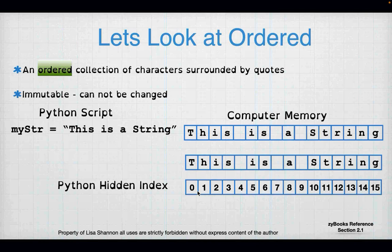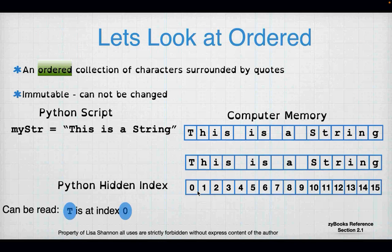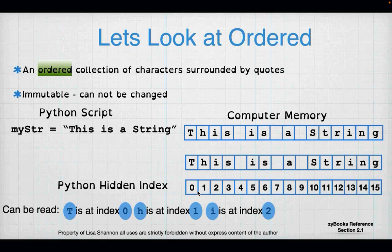Python keeps a hidden index for every string and every list. We get to use it to figure out what is in the string and understand the order of the values, which becomes important when you want to create a new string from an existing one by replacing characters. T is at index 0, H is at index 1, I is at index 2. All lists start with an index value of 0 — lists start at index 0, and strings, because they're lists, start at index 0.